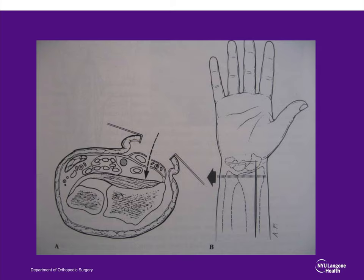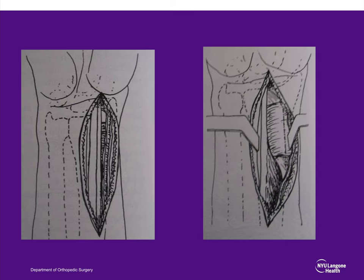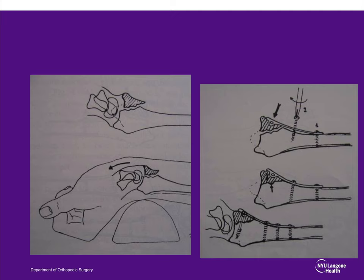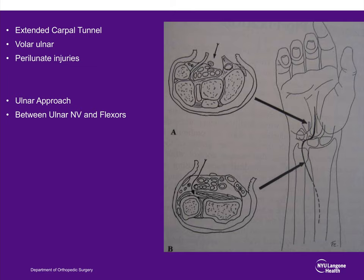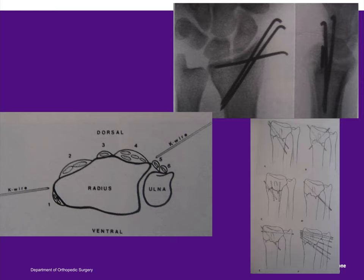There is also the extended carpal tunnel approach, using a volar and ulnar approach by going between the flexor tendons and median nerve on one side and the ulnar nerve-vascular bundle and FCU on the other side. This provides an excellent view of the ulnar aspect of the distal radius and may be considered for perilunate fracture-dislocations and distal radius fractures involving the volar ulnar corner. K-wires are typically placed through the radial side or dorsal ulnar side, ideally between the first and second compartment or between the fourth and fifth compartments to avoid the extensor tendons.